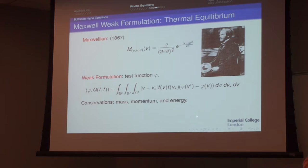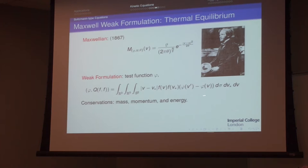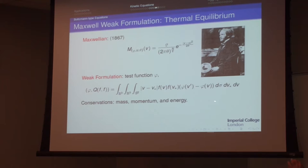To prove this, you need to understand the action of the operator Q better by working in the weak formulation — seeing how Q acts on test functions. Q acting on a test function φ is computed by looking at the change of φ over a collision: φ(v') - φ(v). For example, if φ = |v|^2, you see the change of kinetic energy in a collision, which is conserved. In the weak formulation, the conservation of mass, momentum, and energy corresponds to choosing φ = 1, v, and |v|^2. Boltzmann really proved that the only conserved quantities of the system are exactly mass, momentum, and energy: that ∫φ Q(f,f) dv = 0 for every f if and only if φ is a linear combination of 1, v, and |v|^2.